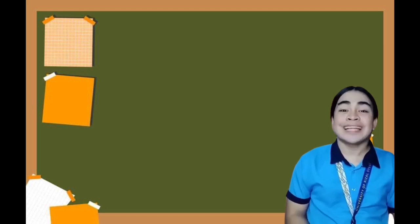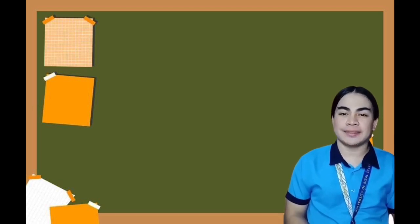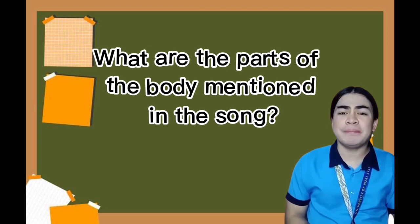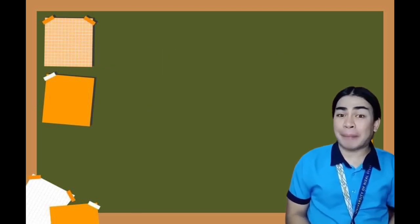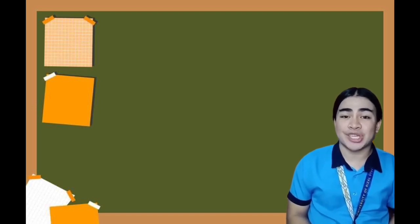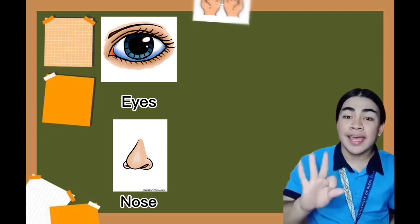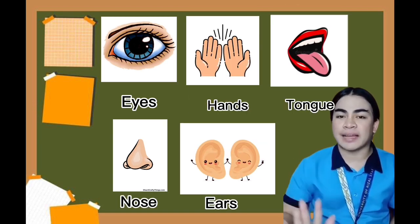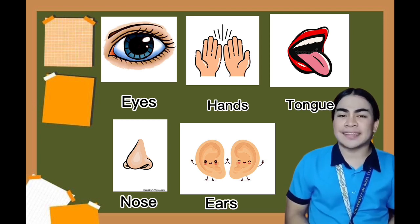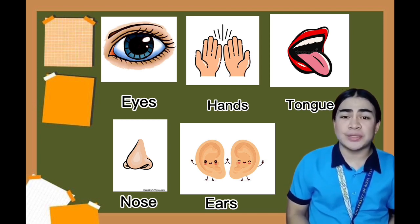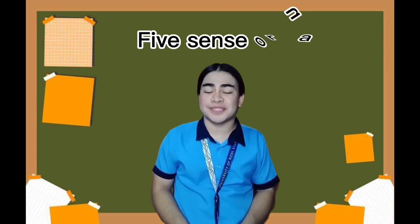Did you enjoy watching, listening, and singing along with the song? What are the parts of the body mentioned in the song? Very good — there were five parts of the body mentioned: eyes, nose, hands, ears, and tongue. So with that, what do you think is our topic for today? Very good — our topic is all about the five sense organs.